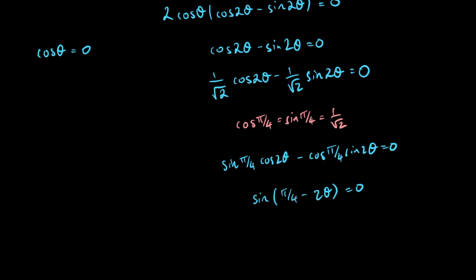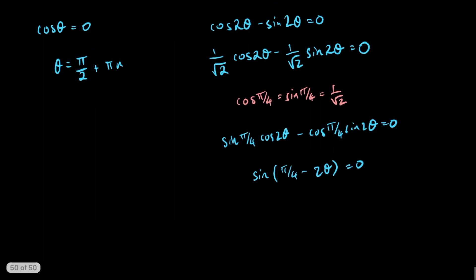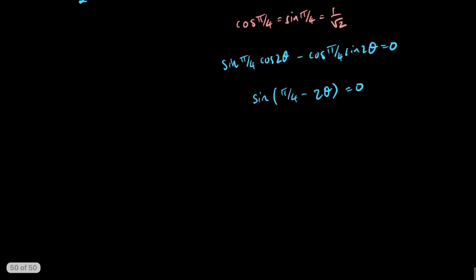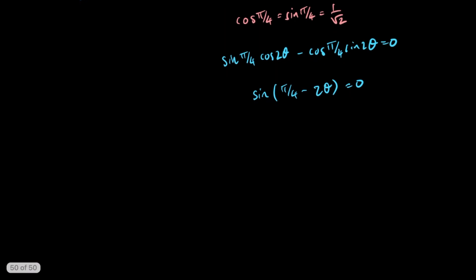Then we can simplify that down to sin(π/4 − 2θ) equals 0. For this equation we don't have to divide by anything, so we don't have to check any additional solutions, which is nice. cosθ equals 0 gives us solutions for θ of π/2 plus πn — so 3π/2, 5π/2, and so on — and sin(π/4 − 2θ) equals 0 gives us another set of solutions.